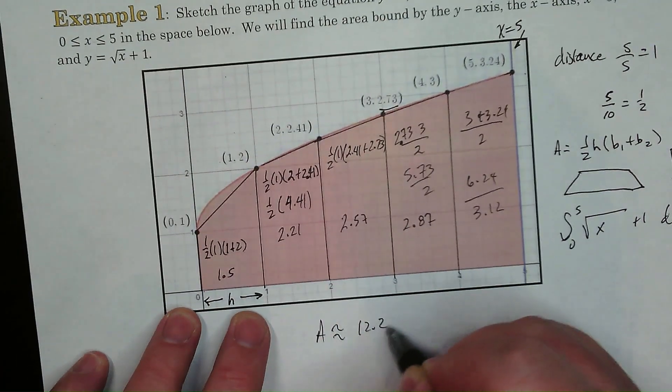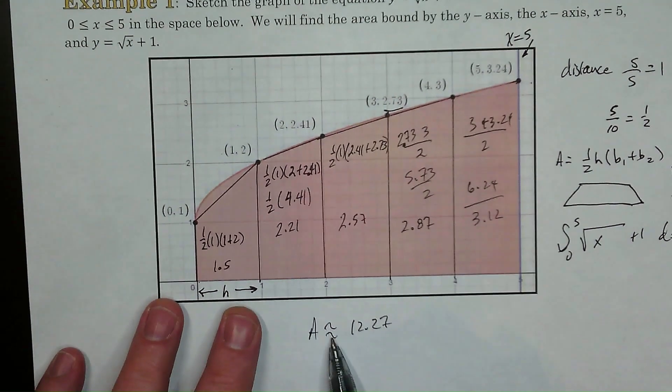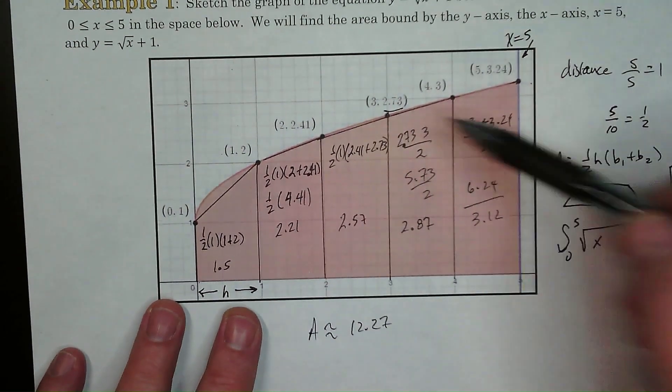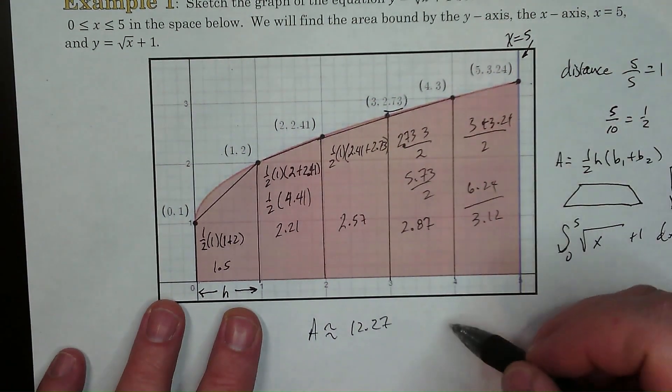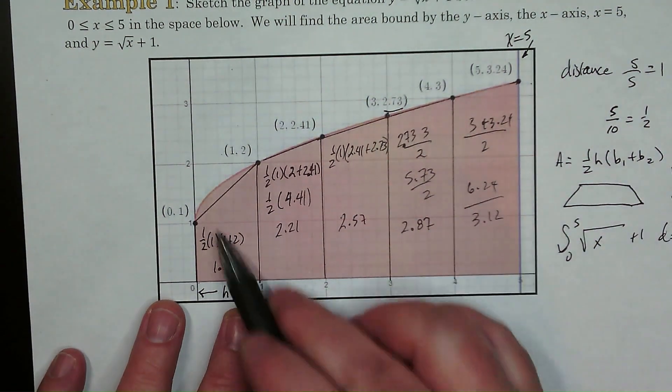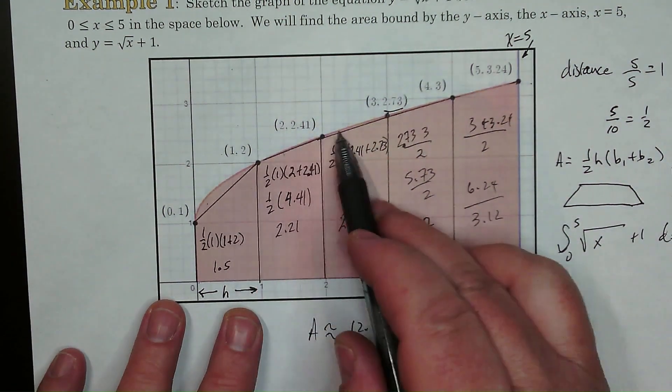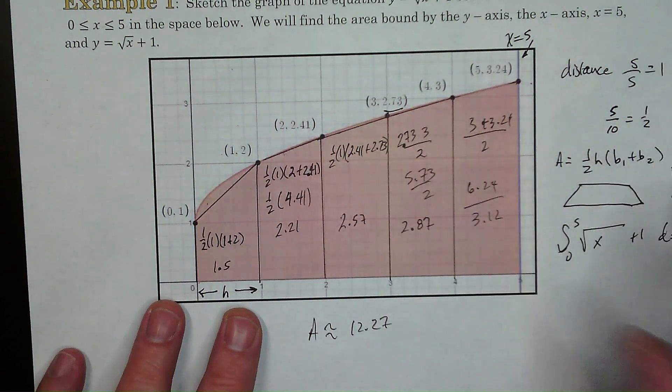Now this is an approximation. So you have to use that little squiggly thing right there. Now if you were to do this in a calculator, the actual is 12.5. So it's a little low, which we'd expect because you see we're missing some there and a little bit underneath each one of these. But that's pretty good.